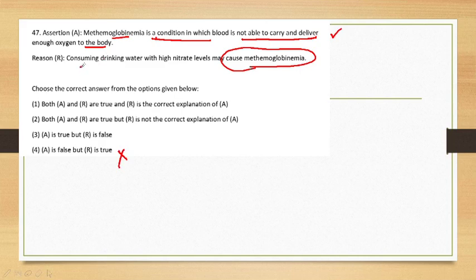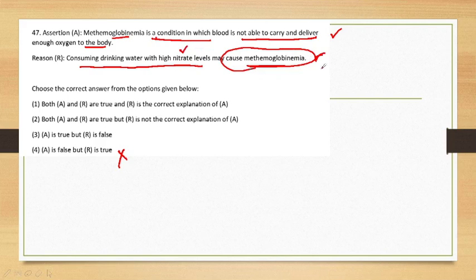Consuming drinking water with high nitrate levels may cause this problem because there are various reasons why blood cells cannot supply oxygen to body tissues effectively. So when we drink high-nitrate water, this condition can occur. The answer for question 47 is that both assertion and reasoning are correct, and R is the correct explanation of A.